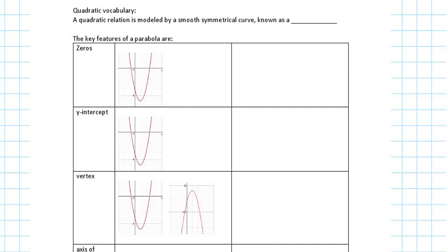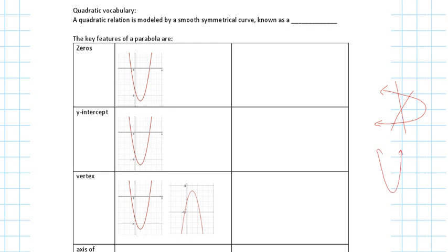How about the graph? Curved. Could it be opening downward though? Could it be sideways? No. The only two ways that a quadratic will open is up or down. This is not quadratic. So the quadratic graph would either open up or open down.